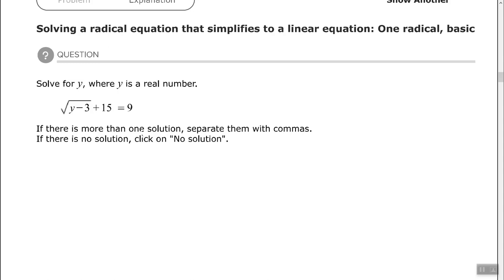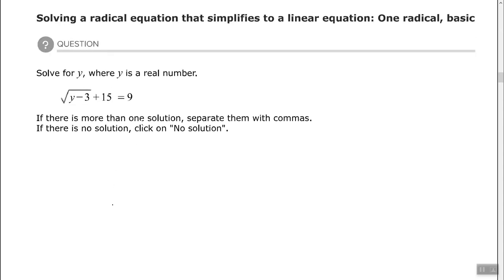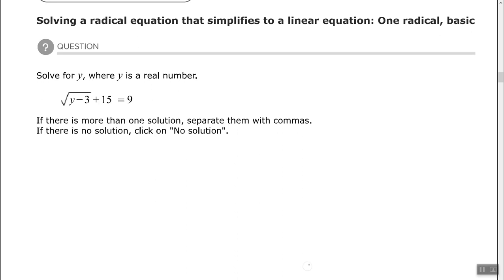So let's look here. All right, so we have the square root of y minus 3 plus 15 equals 9. So the first thing I want to do is subtract 15 from each side of the equation. All right, so now I have the square root of y minus 3 equals negative 6.